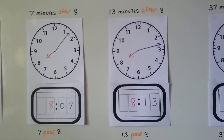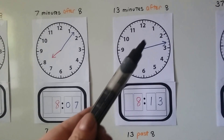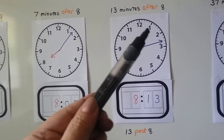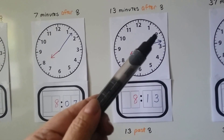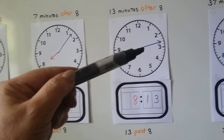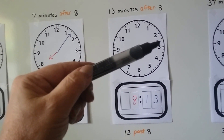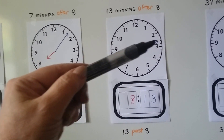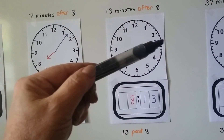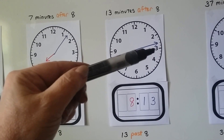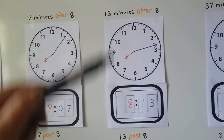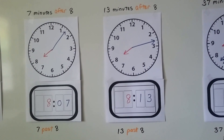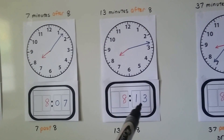Now look. We know that the minute hand at the 2 would be at 10 minutes, and the 3 would be 15. But now look where the minute hand is pointing — here's the 10, and then 11, 12, 13. It's not at the 15 yet; it's at 13. That's 13 minutes after 8. We can also say 13 past 8, written as 8:13.